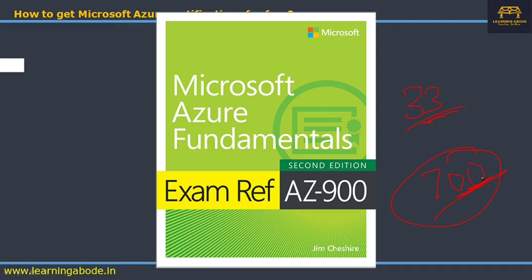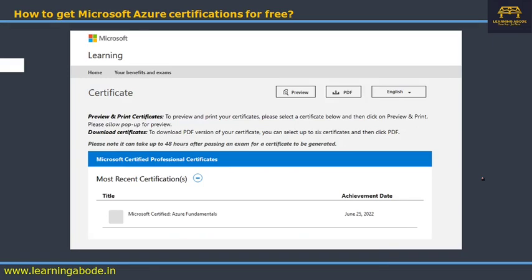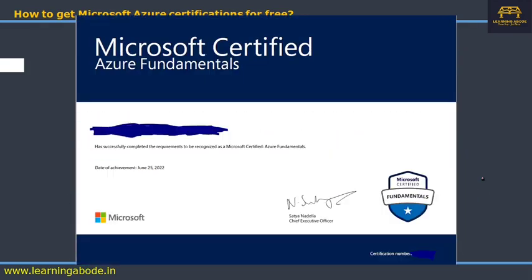The result is shown immediately after you click Submit. Within minutes you can download the certificate from your learning dashboard as a PDF. You can then mention it on your resume and LinkedIn. The certificate shows your name, date of achievement, and a certificate number. Notably, there is no expiry date shown on the AZ-900 Fundamentals certificate.